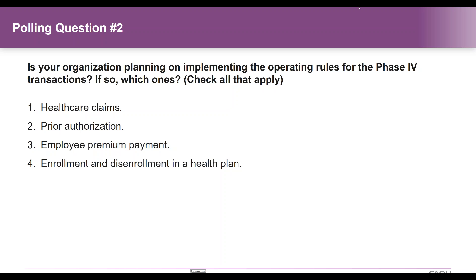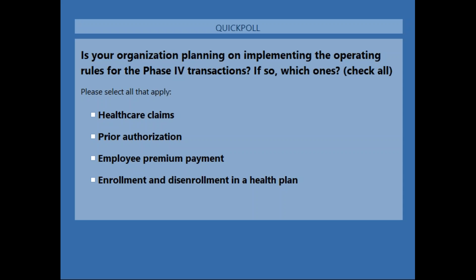This brings us to our second polling question: is your organization planning on implementing the operating rules for the Phase 4 transactions? If so, which ones? We'll pause for just a brief moment for everyone to respond. The reason we're asking this question is to help us understand which resources might be in higher demand from our audience and to help us plan education sessions. I see our attendee number has ticked up to 164.